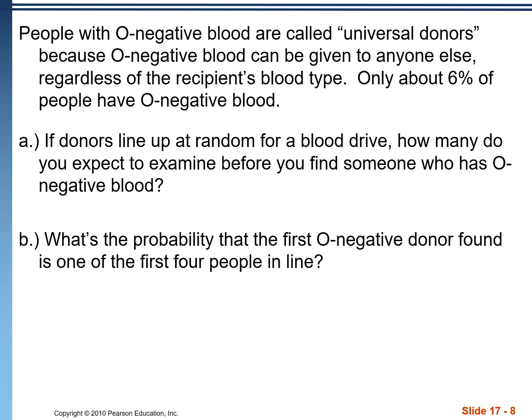People with O negative blood are called universal donors because O negative blood can be given to anyone else, regardless of the recipient's blood type. Only about 6% of people have O negative blood. If donors line up at random for a blood drive, how many do you expect to examine before you find someone with O negative blood? This is a waiting time problem.